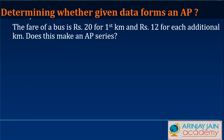Let us now look at a few examples to see whether they form an AP or not, determining whether given data forms an arithmetic progression. The fare of the bus is Rs.20 for the first 1 km. When you get into a bus, you have to pay Rs.20 and Rs.12 for each additional km.